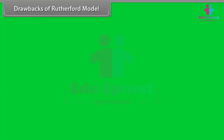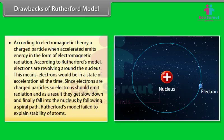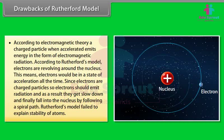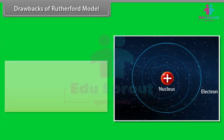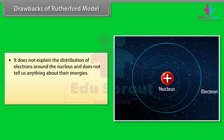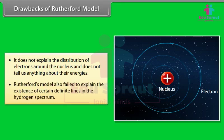Drawbacks of Rutherford's model: 1. According to electromagnetic theory, an accelerated charged particle emits energy as electromagnetic radiation. Since electrons revolve around the nucleus, they should emit radiation, slow down, and spiral into the nucleus — Rutherford's model failed to explain the stability of atoms. 2. It does not explain the distribution of electrons or their energies. 3. It failed to explain the existence of definite lines in the hydrogen spectrum.